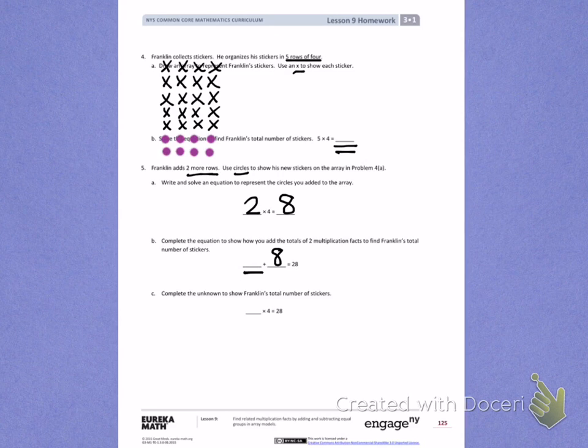Letter C. Complete the unknown to show Franklin's total number of stickers. On this line, you're going to write the total number of rows, including all the X's and all the circles. So don't count every single one. Count the total number of rows we used to find 28 stickers.